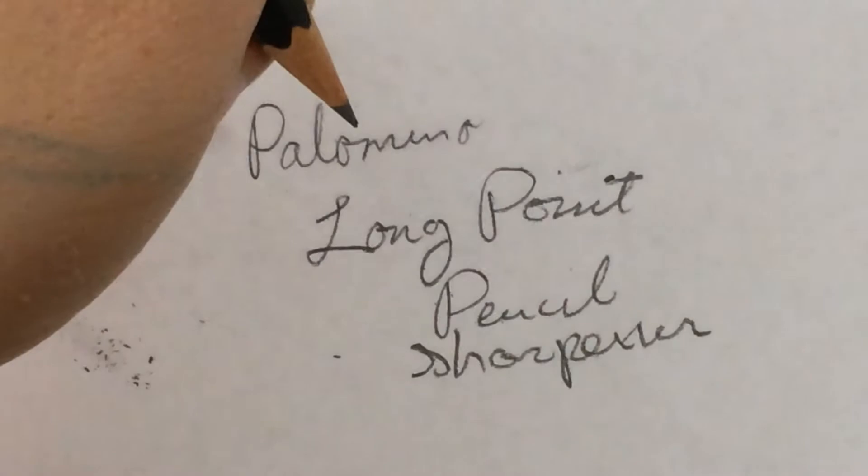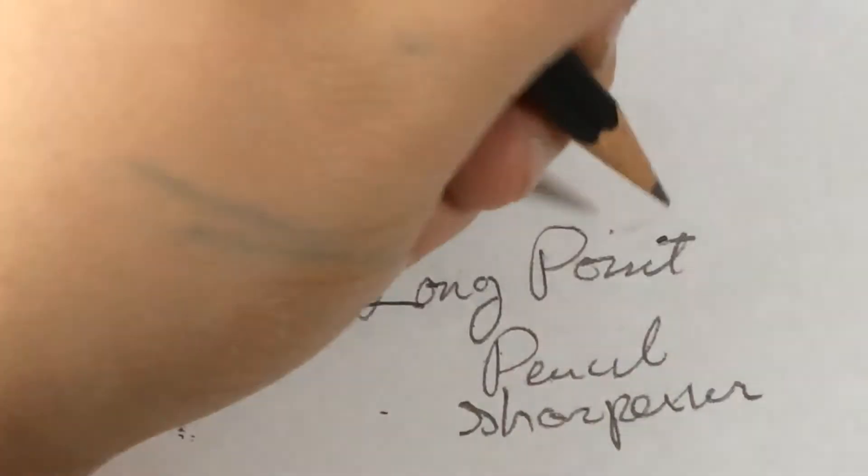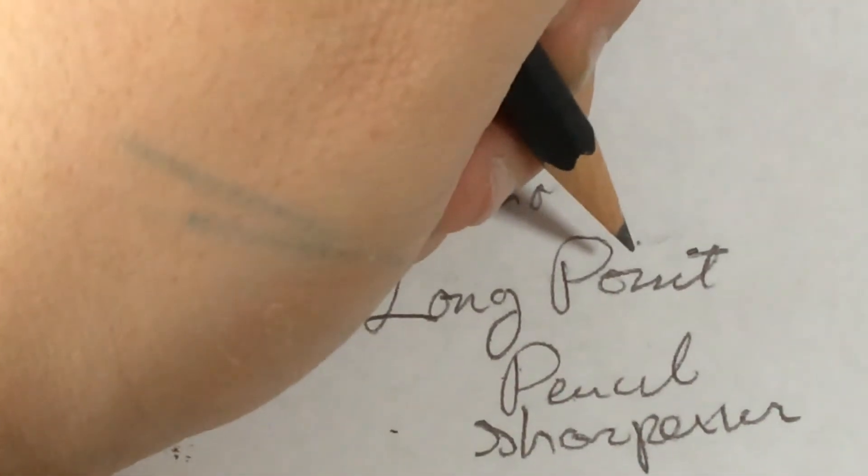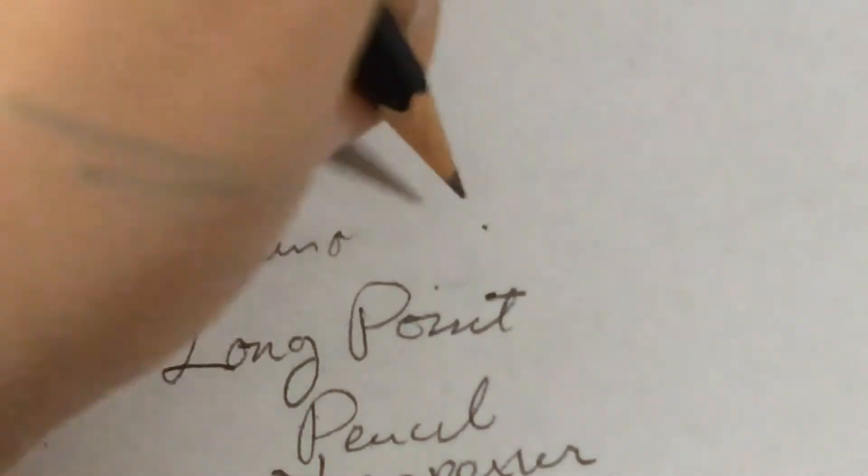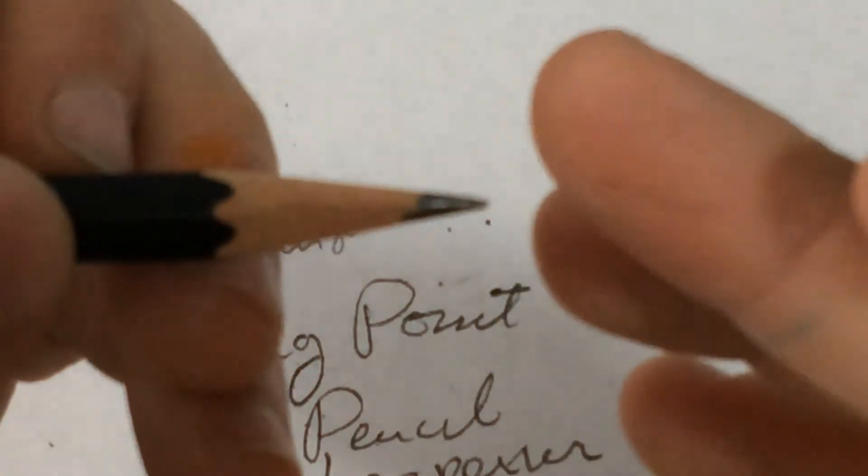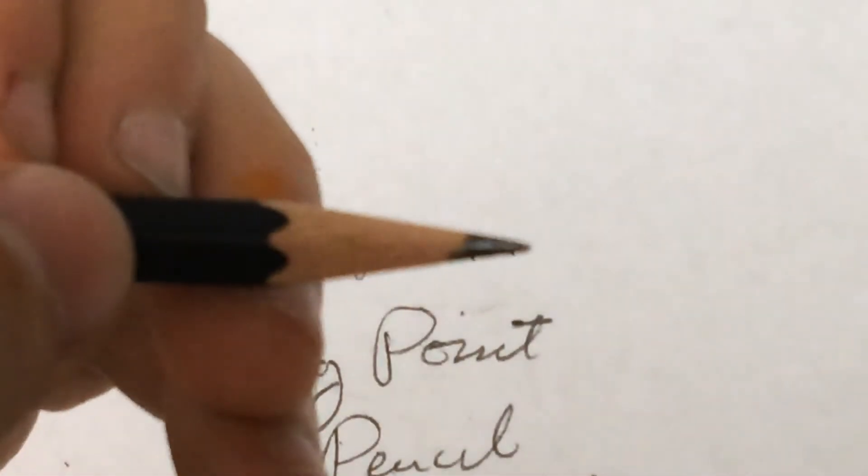And then you can pretty much just take a regular piece of paper. My handwriting is not that good. And one thing it will take into account is because this is a long point, it's a really fine point. When I go down to hit the i's, it does damage the point quite a bit. You can already tell it's already flat. There we go.